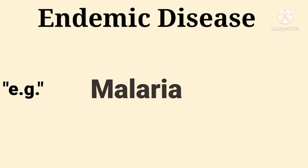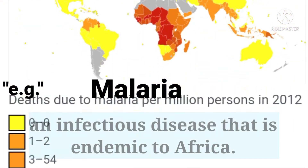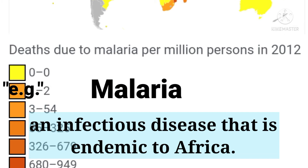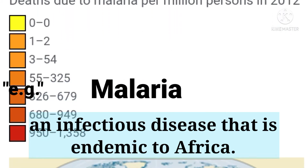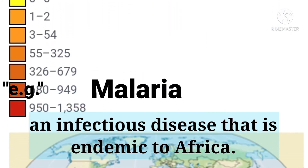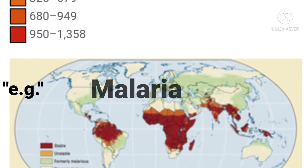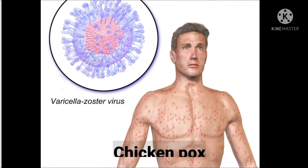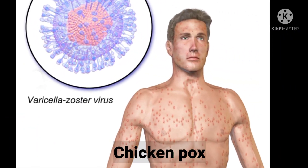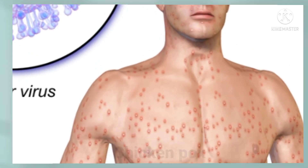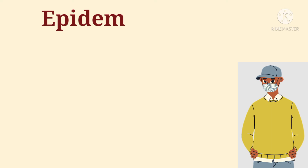An example of an endemic disease is malaria, an infectious disease that is endemic to Africa. Another example is chicken pox, which is endemic to the United Kingdom. Next we'll see about epidemic diseases.